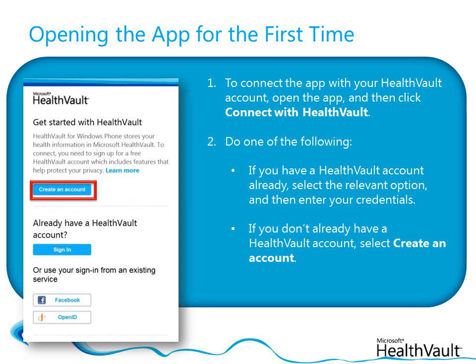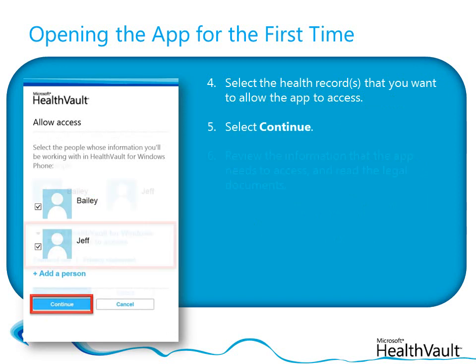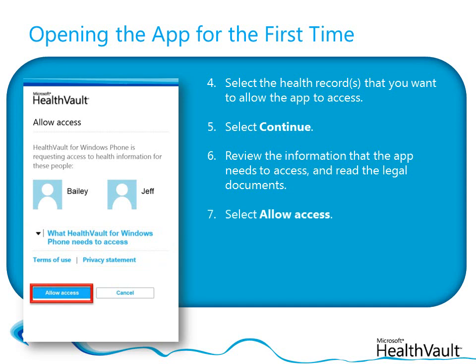When you've signed in to your HealthVault account, the final step to connect the app with your HealthVault account is to allow the app access to your HealthVault information. On the Allow Access screen, select the health records that you want to be able to access with the app, and then click Continue. Review the information that the app needs to access. If you're happy to allow the app to access your information and you agree with the Terms of Use and the Privacy Statement, select Allow Access to finish connecting the app to your HealthVault account.